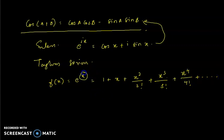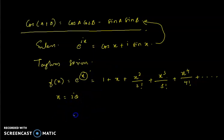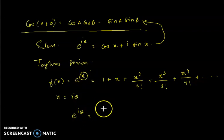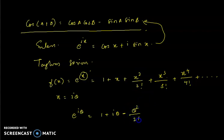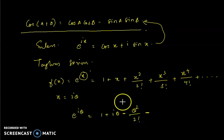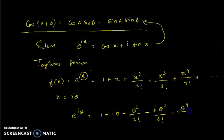Instead of x, let x = iθ. Substituting, e^(iθ) becomes 1 + iθ + (iθ)²/2! + (iθ)³/3! + (iθ)⁴/4!... Since i² = −1, this looks like 1 + iθ − θ²/2! − iθ³/3! + θ⁴/4! and so on.